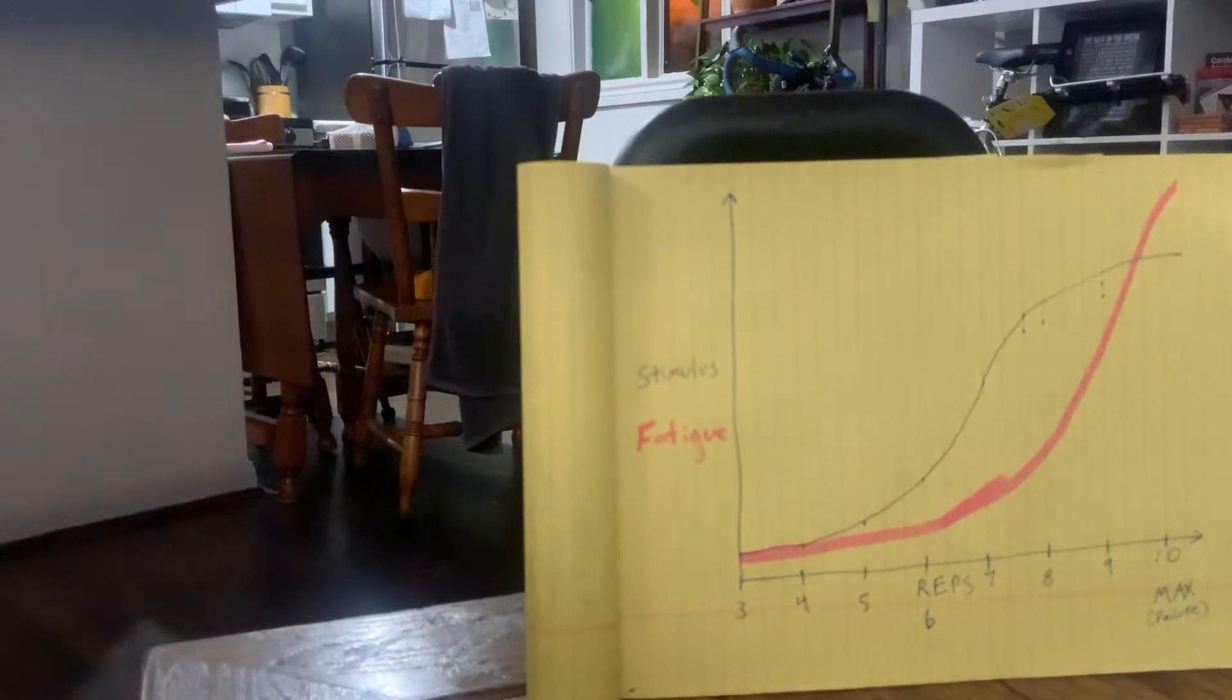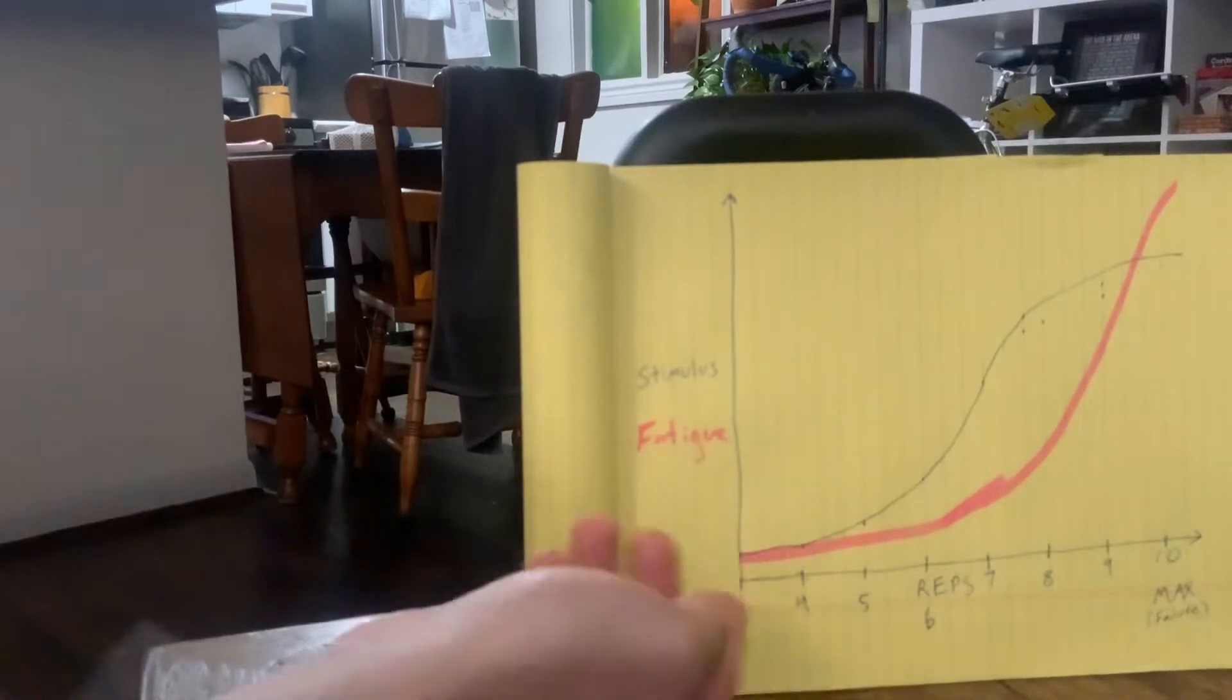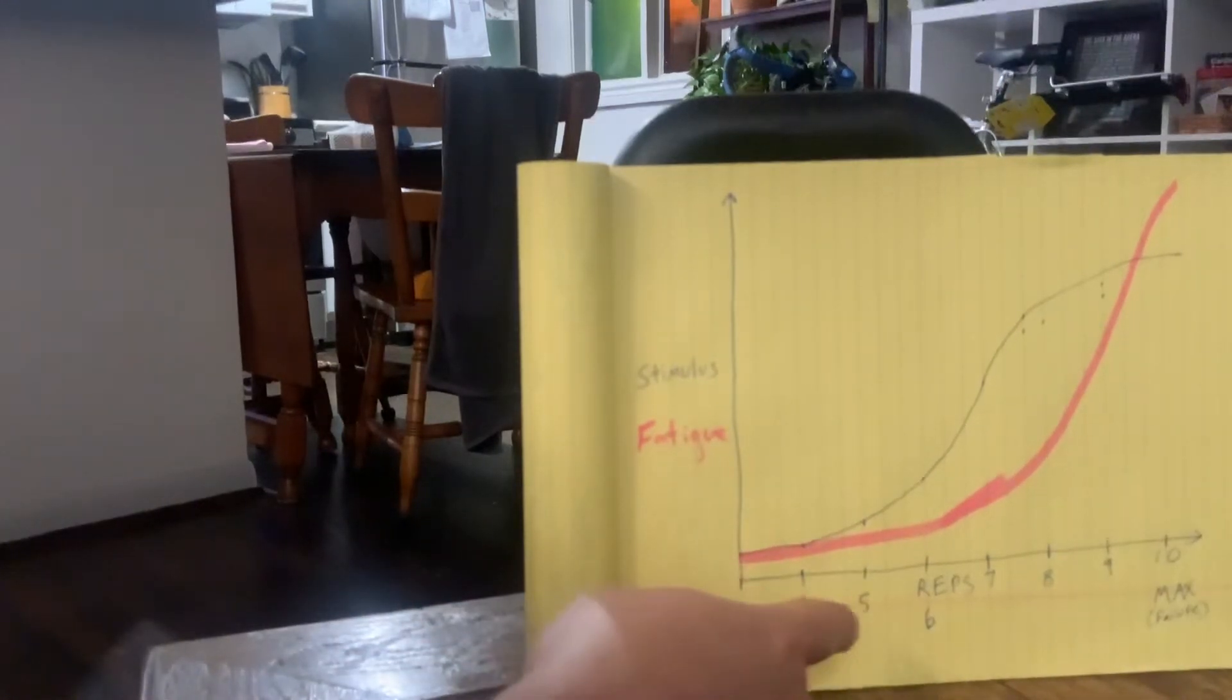Another way to talk about this is called reps in reserve, or how many reps you could have done. If you did 10, you have zero reps in reserve. Nine is one rep in reserve. Eight would be two reps in reserve, and so on.